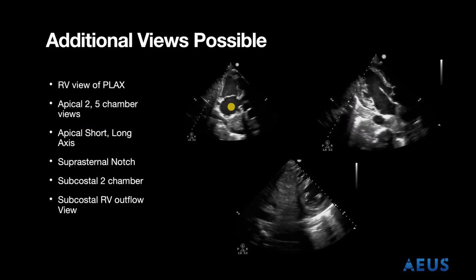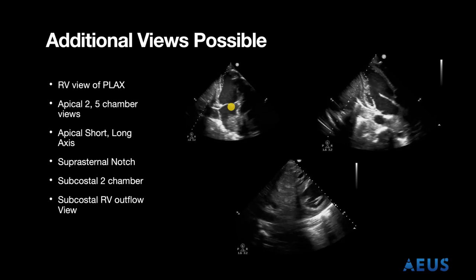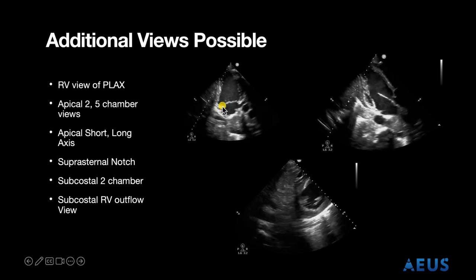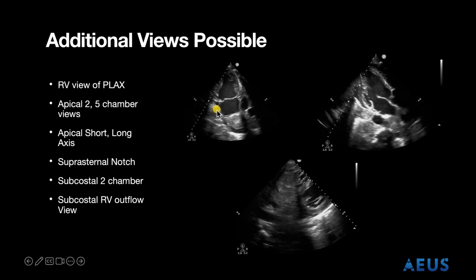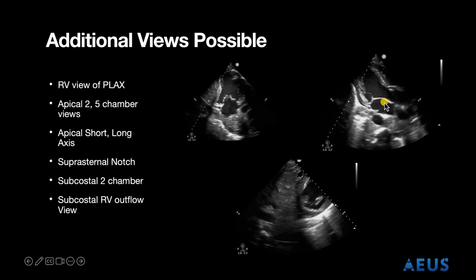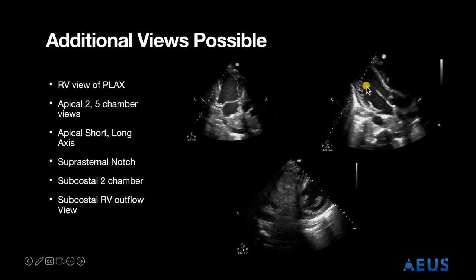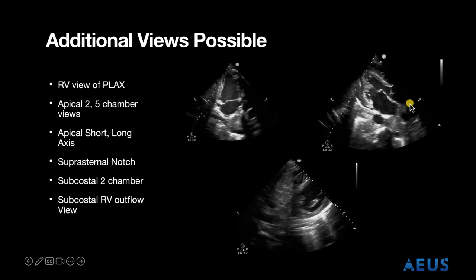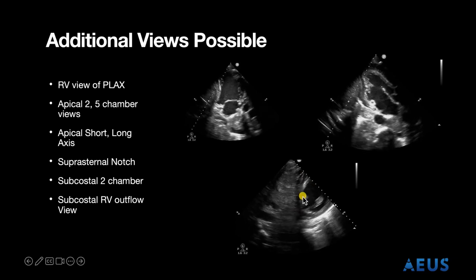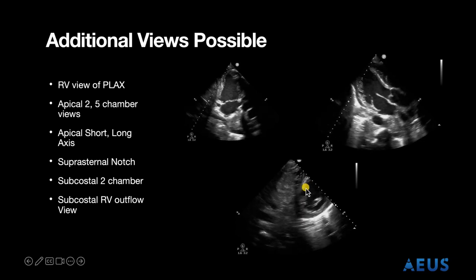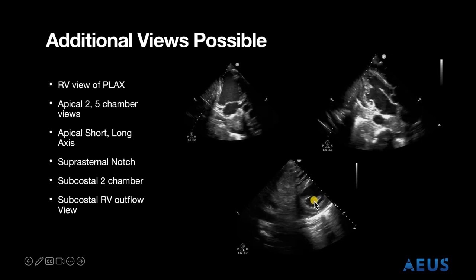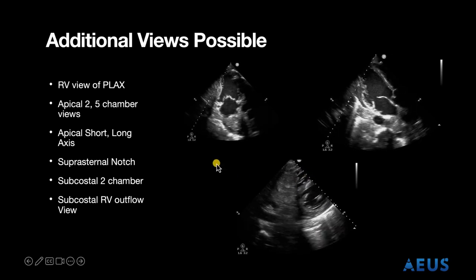There are additional views possible, which will be covered more during our advanced lecture. Here we have our apical two chamber view — the left atrium and the left ventricle. Here we see our apical three chamber view, which includes the left atrium, left ventricle, and aortic outflow tract. And this is our subcostal two chamber view, essentially similar to the parasternal short axis view but obtained from a subcostal window. You can see our papillary muscles as well as our right ventricle.